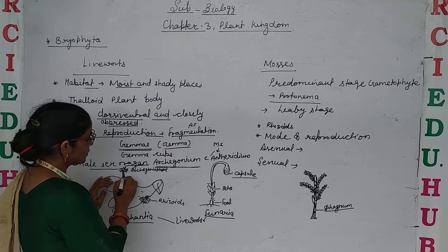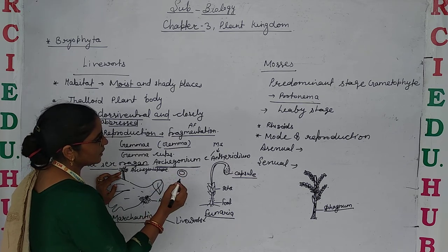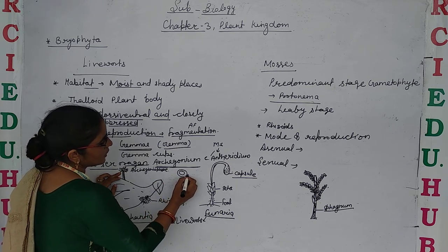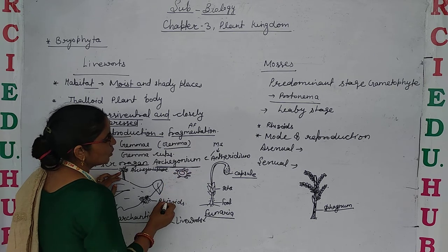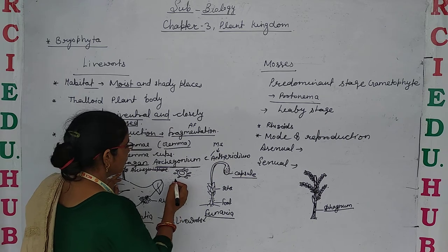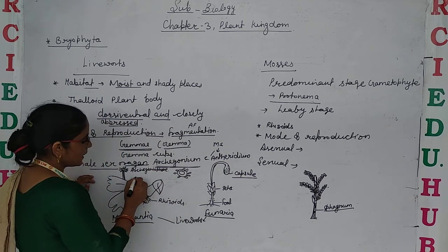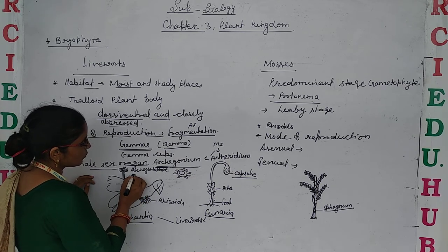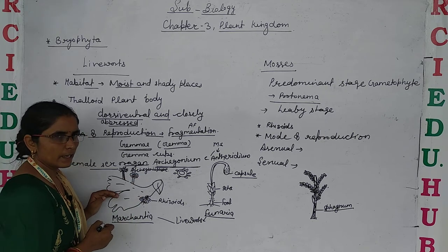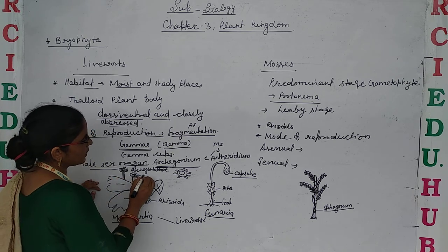So the structure of the archegoniophore is a little bit different from the antheridiophore. The archegoniophore has petal-like structures which are not attached with each other — they are freely rotated. Whereas the antheridiophore is also present on the nether thallus, and its structures are attached — they are not free to move. So this is the difference between the structure of the archegoniophore and antheridiophore.